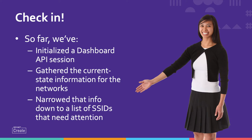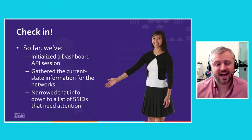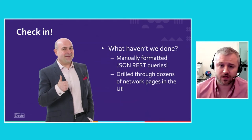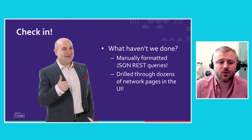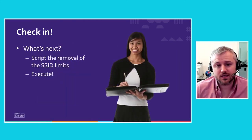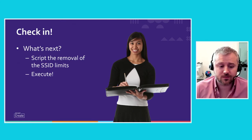Let's check in and review our progress so far. We've initialized a dashboard API session. We've gathered the current state information for the networks in one organization and narrowed that information down to a list of SSIDs that need attention — the ones that actually have bandwidth limits set. But what haven't we done? We haven't manually formatted any JSON REST queries, and we haven't drilled through dozens of network pages in the dashboard GUI. So what do we do next? We're going to script the removal of the SSID limits — we're going to build a function and then execute it.